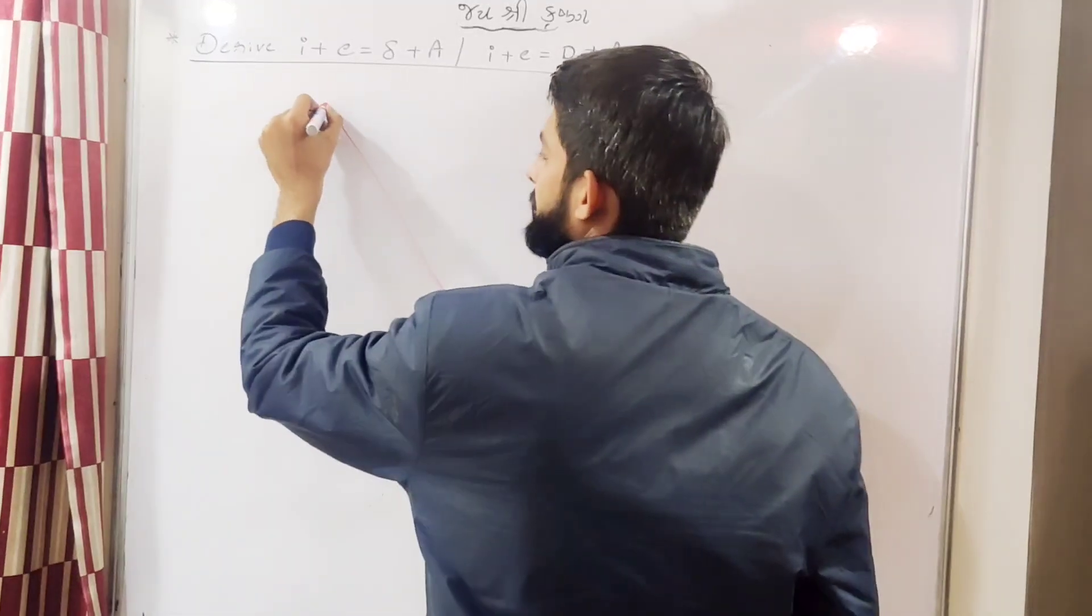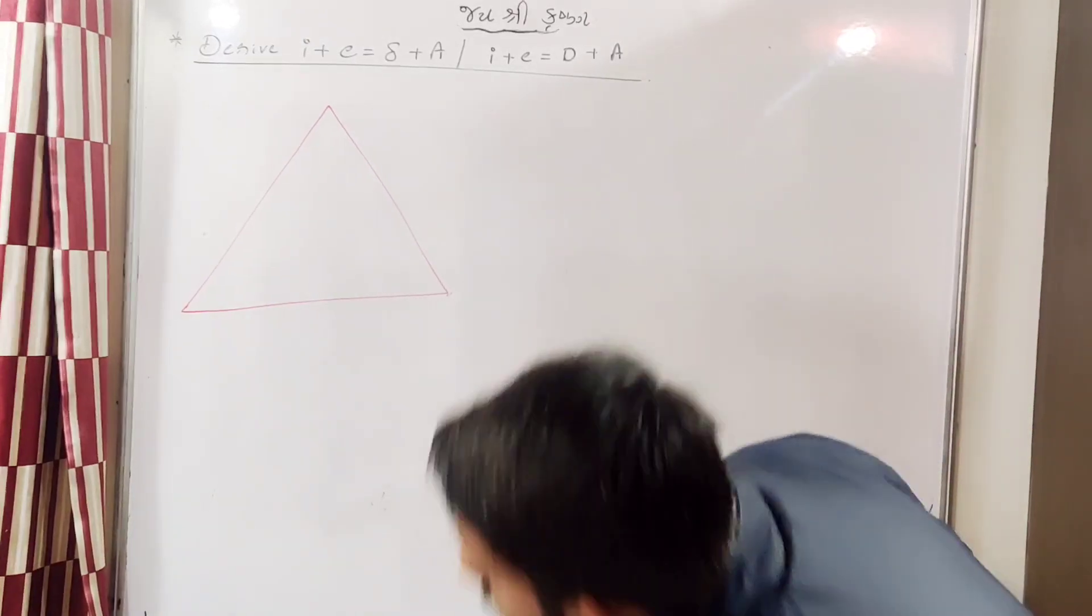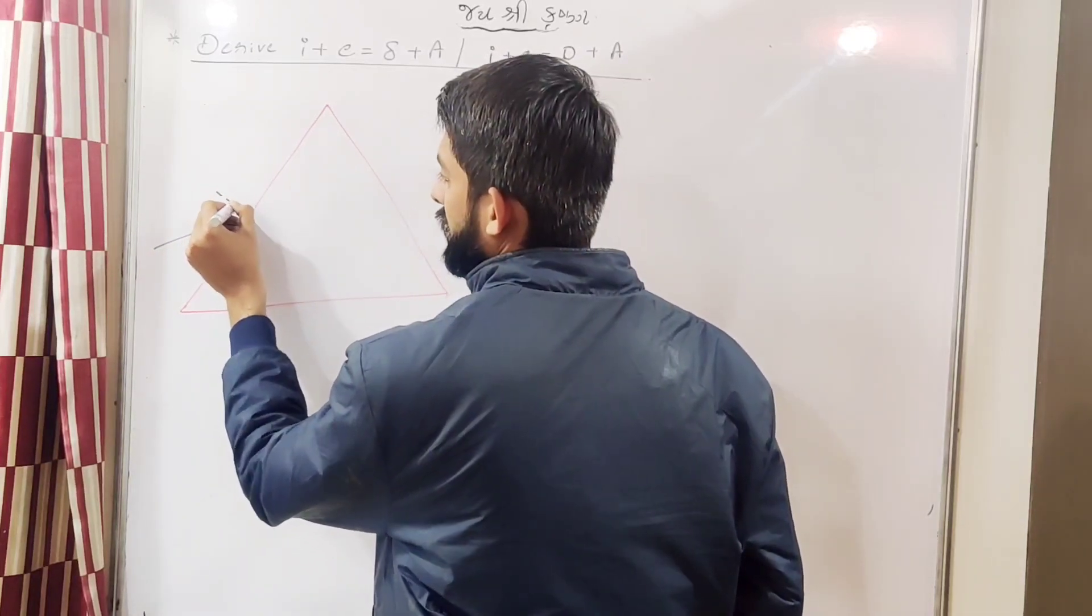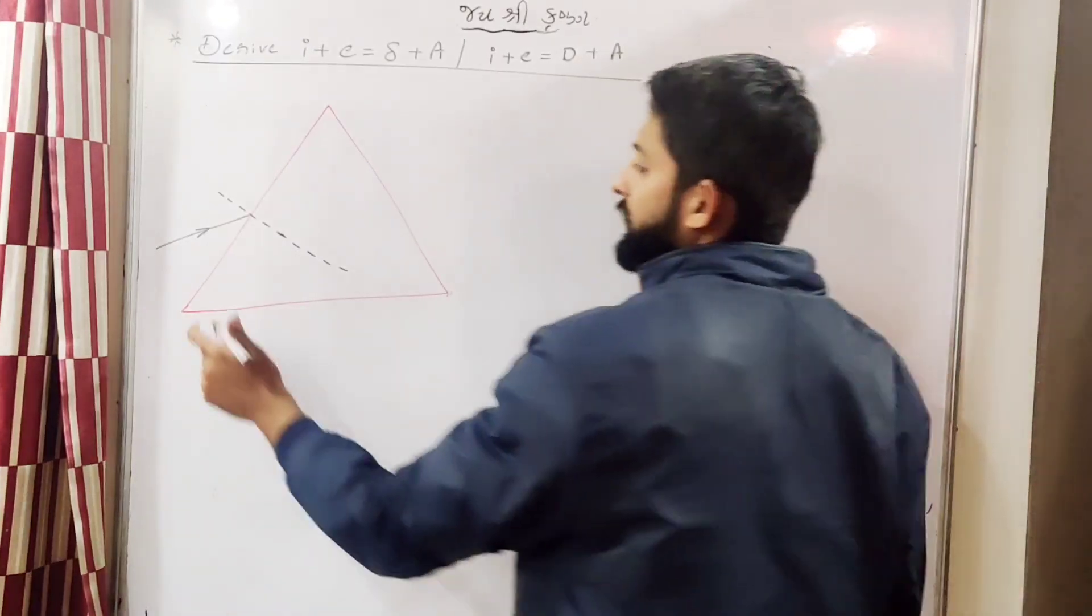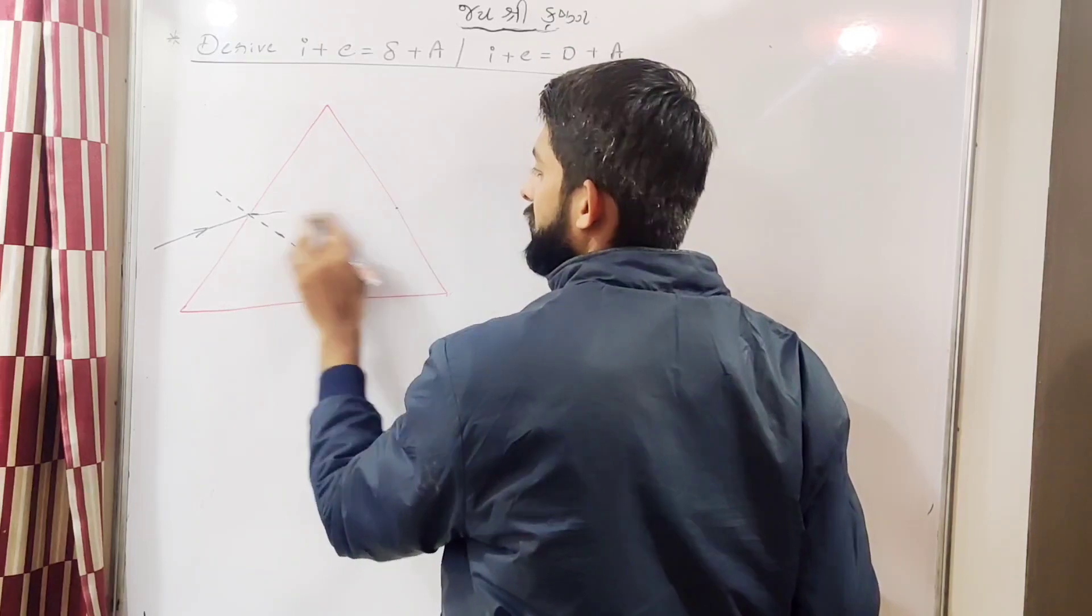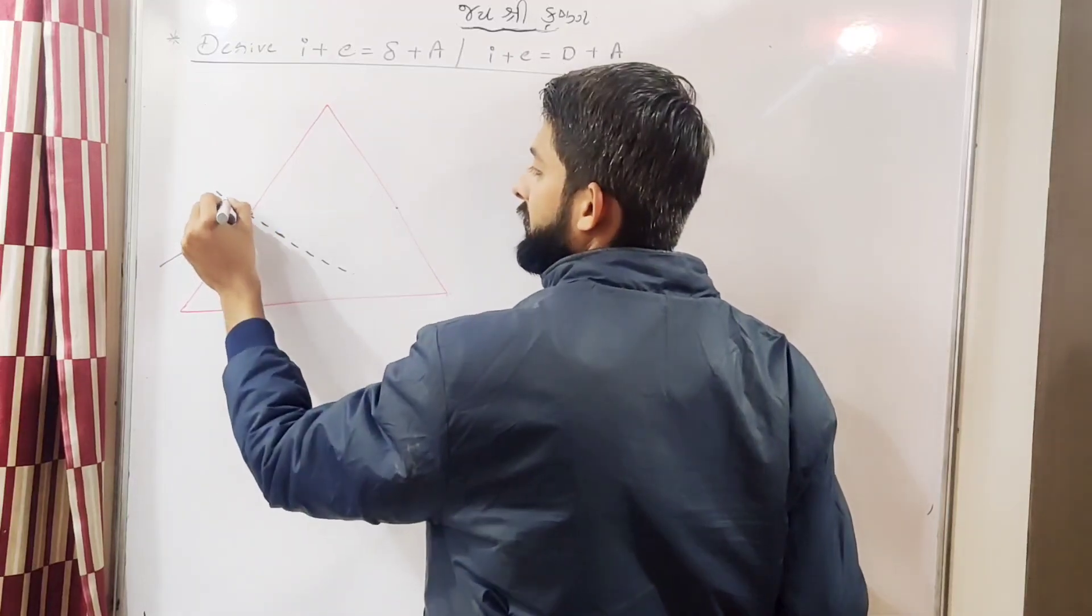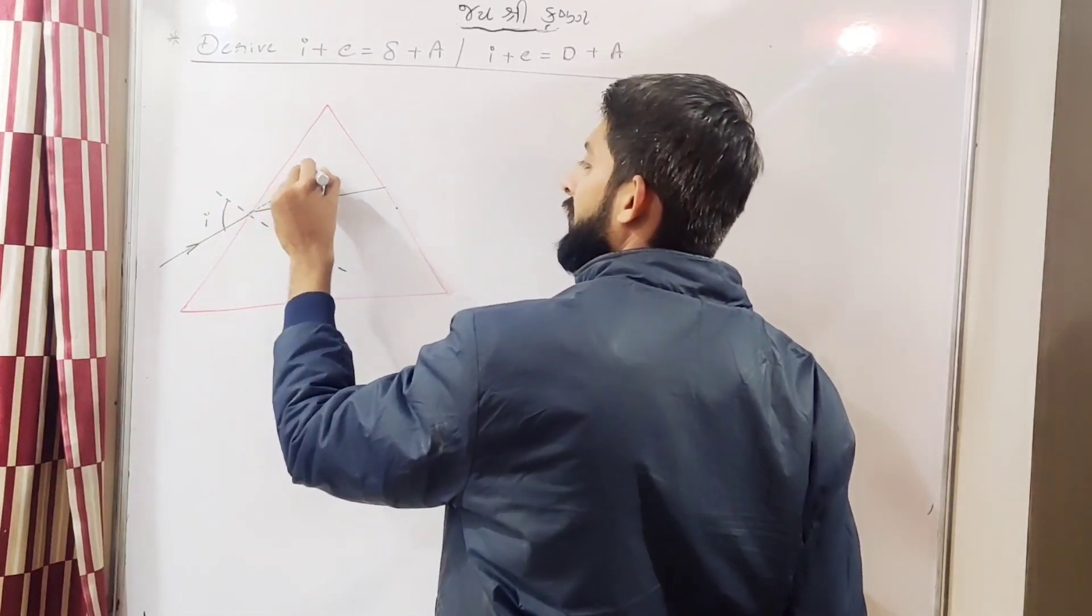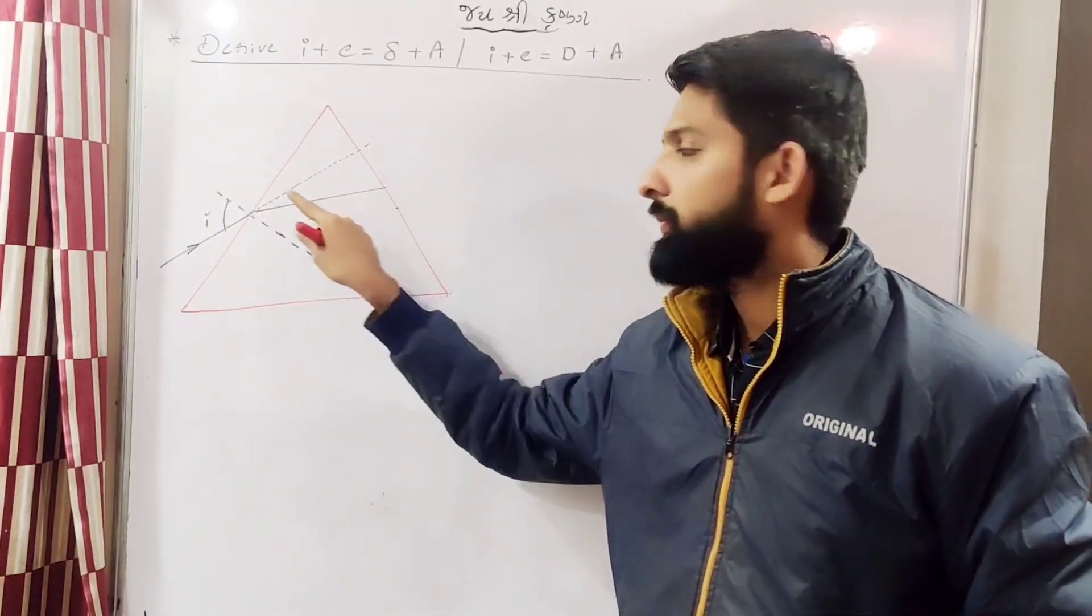Let's first draw the prism. So let's say this is the triangular prism and we are having an incident light. Here normal will be like this. This is the normal. So light will bend towards normal. Let's consider slightly more angle of incidence.